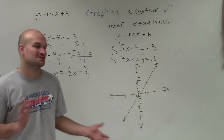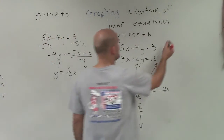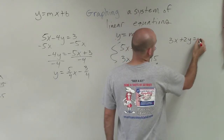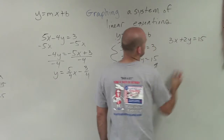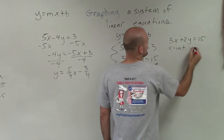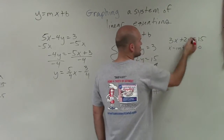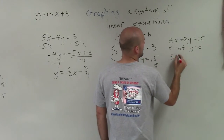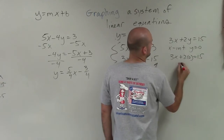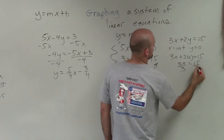Sometimes it's very tricky to graph that way, so a lot of you might opt to just do the x and y intercept method, which is perfectly fine as well. To find the x-intercept, set y equals 0, put 0 in for y, and then solve.